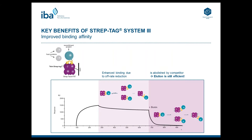Streptactin XT in combination with Twin Streptag has an improved binding affinity. This was achieved by optimization of the biotin binding site of Streptactin XT for Streptag, which results in a better on-rate of the interaction. The other effect influencing binding affinity is a reduced off-rate, which is achieved due to an avidity effect of Twin Streptag. Since it has two Streptag2 motifs in series, it can have two different stages of binding to Streptactin XT. One is the binding of both motifs and the other is the transient release, where only one of the two Streptag2 motifs binds to Streptactin XT.